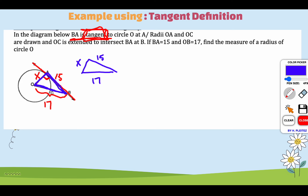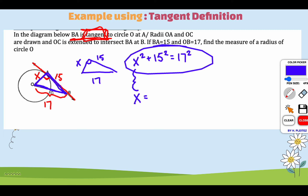We can use the Pythagorean theorem here. We do X squared plus 15 squared equals 17 squared, then just do your algebra to solve for X. Whatever you get for X, that's going to be your value of the radius. When you have a tangent line, draw your right angle in — you might see a right triangle in there and be able to revert back to Pythagorean theorem to help you.